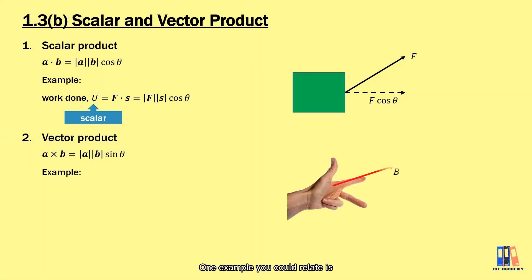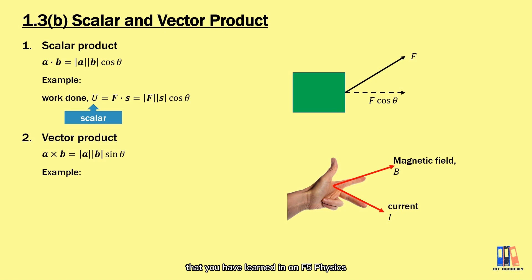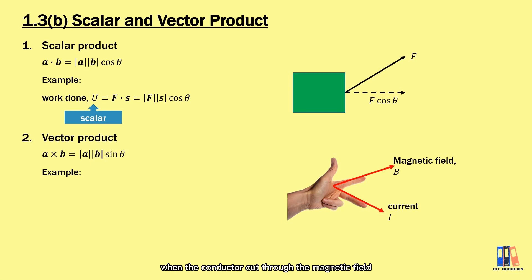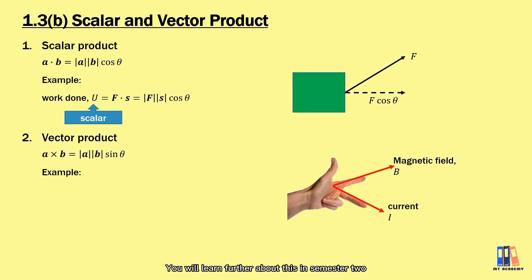One example you could relate to is the Fleming left-hand rule, which we learned in Form V physics. It is used to determine the direction of magnetic force when a conductor cuts through a magnetic field. You will learn further about this in semester 2 to calculate the magnitude and to determine the direction of the magnetic force.